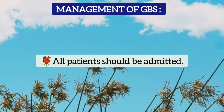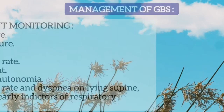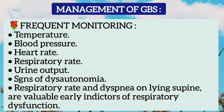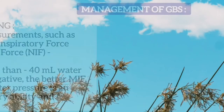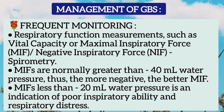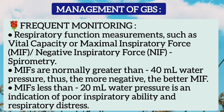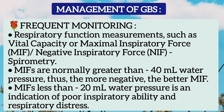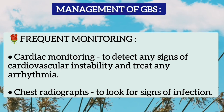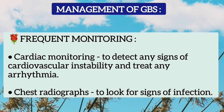All patients with GBS should be admitted. Frequent monitoring is important, including temperature, blood pressure, heart rate, respiratory rate, urine output, and signs of dysautonomia. Respiratory rate and dyspnea on lying supine are valuable early indicators of respiratory dysfunction. Respiratory function should be measured with spirometry — vital capacity or maximal inspiratory force (negative inspiratory force). Normally this is greater than minus 40 cmH₂O; if less than minus 20 cmH₂O, it indicates poor inspiratory ability and respiratory distress. Cardiac monitoring is also important to detect cardiovascular instability and treat arrhythmias.